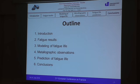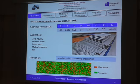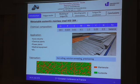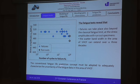The material that we investigated is the metastable austenitic stainless steel KC304 with the following chemical composition. It was delivered in sheet form after hot-rolling and solution annealing, and then subsequently pre-strained in order to induce a 60% martensite volume fraction.